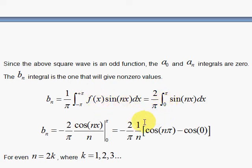So doing that, very easy, it gets negative cosine and x over n here and I integrate from 0 to pi. I have minus 2 over pi in front, 1 over n and I have cosine of n pi minus cosine 0.